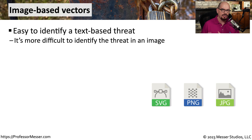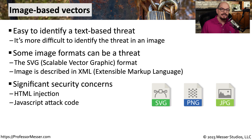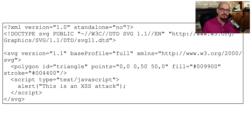Not only can messaging systems be used as an attack vector, but the images we see on our screen can also be used as an attack vector. A good example is the SVG image format — the Scalable Vector Graphic format — understood by most browsers. This is actually more than just an image; it's an XML file that describes the image and allows you to embed other information within the XML. This means an attacker could put information within the image description that would then run inside of your browser, such as injected HTML code or JavaScript contained within the XML that describes an SVG image.